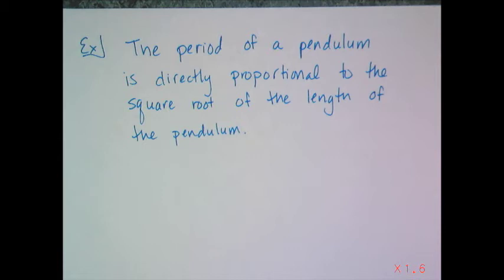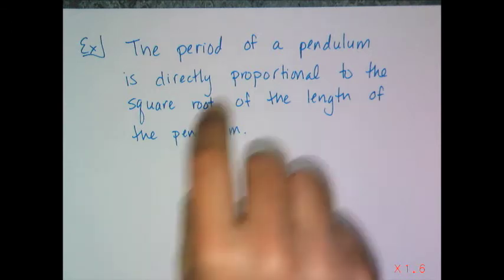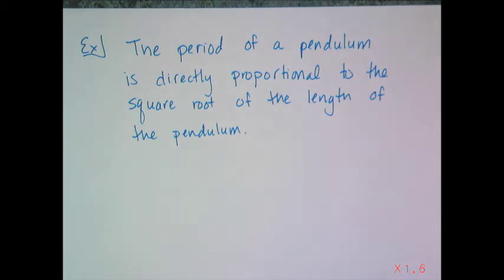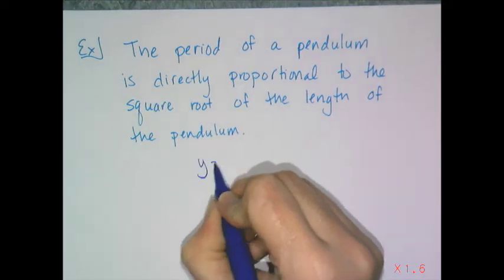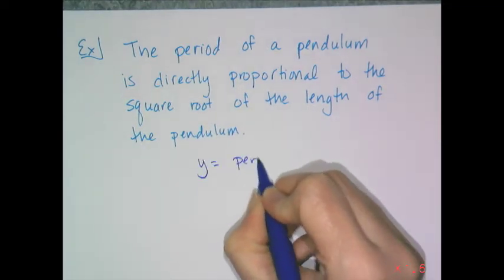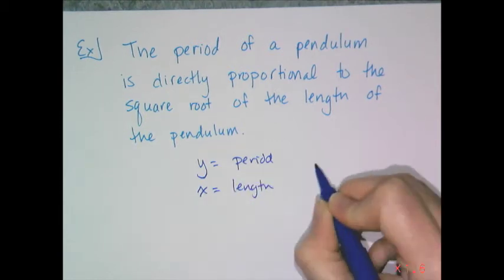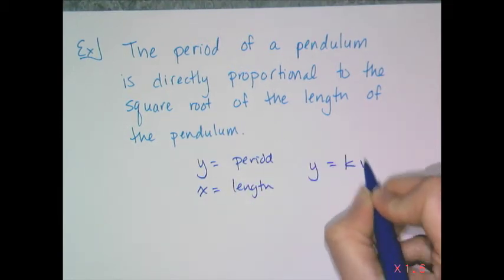The example for direct variation that we're going to look at is the law that talks about pendulums. The period of a pendulum is directly proportional to the square root of the length of that pendulum. Directly proportional means the same thing as direct variation. So if I said y is the period and x is the length, then I have some equation y equals k square root of x.